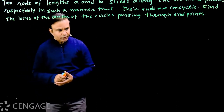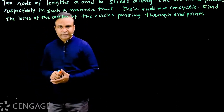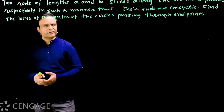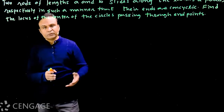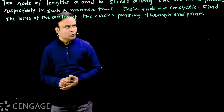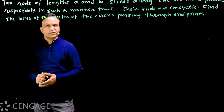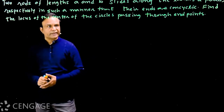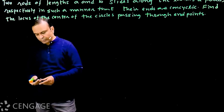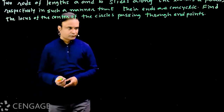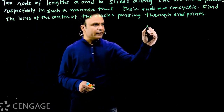We know that four points are not always concyclic; for concyclic points we have some conditions which we will be using. We have to find the locus of the center of the circles passing through these endpoints. So let's start with the diagram.